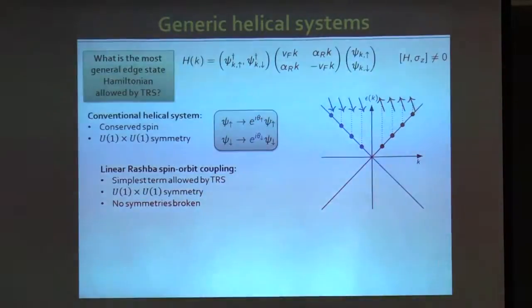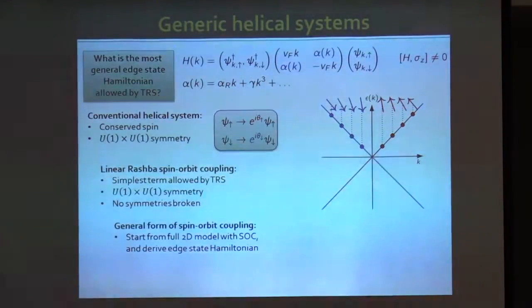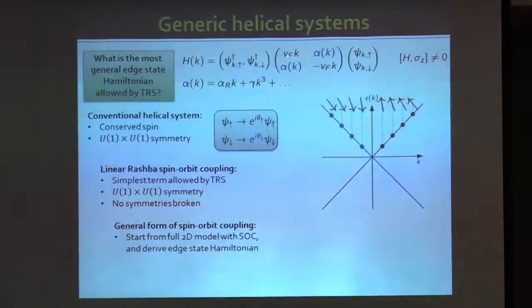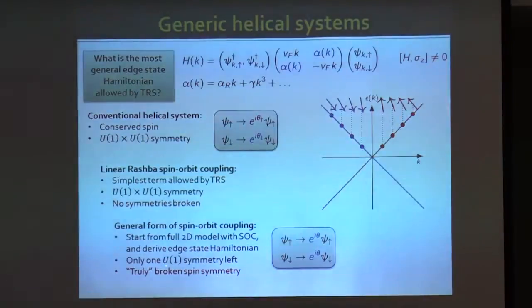To truly break spin symmetry, one must approach the problem using a two-dimensional Hamiltonian, add spin-orbit coupling to this 2D Hamiltonian, and then project out the one-dimensional edge states. We did this for various models. In general, in addition to the linear-in-k kinetic energy, the spin-orbit coupling has cubic terms in k. The spin quantization axis then rotates as a function of momentum, so one cannot simply undo this with a global change of spin quantization axis. This model has only one U(1) symmetry left, corresponding to conservation of total charge.